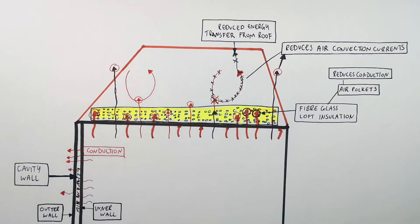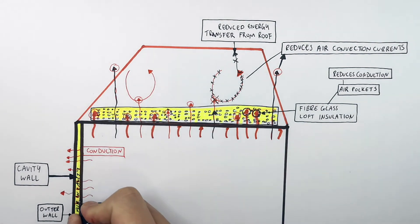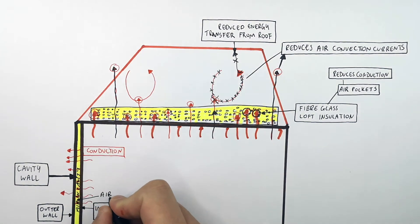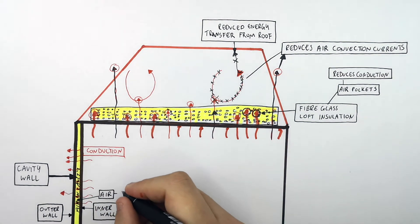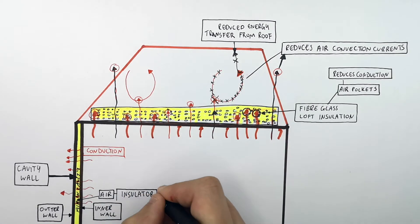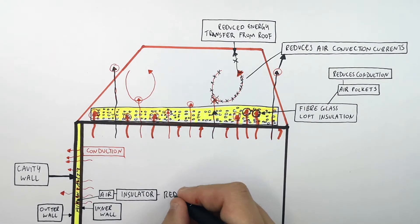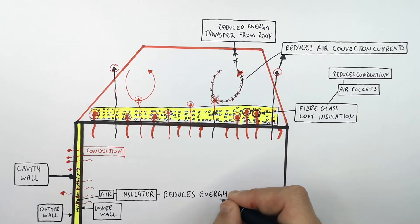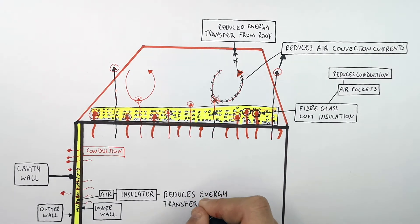This cavity wall has been filled with fiberglass or other insulating materials to further decrease the thermal conductivity of the wall. Filling the space in the cavity wall with foam leads to an increased level of insulation, so less energy is conducted through the walls to the surroundings and your house will stay warmer for longer.